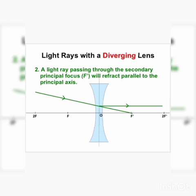Now let's talk about the second case. A light ray passing through the secondary principal focus will reflect parallel to the principal axis. The light passing through the secondary principal focus — what happens after refraction? It becomes parallel to the principal axis. So in the case of the concave lens, the ray directed toward the secondary principal focus will emerge parallel to the axis.